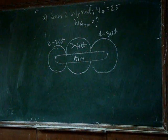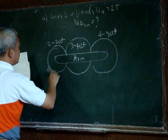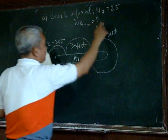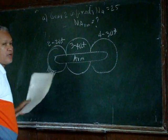In this problem, we have this body fixed, and N4 has a rotation of 25. We have to determine the rotation of the arm.